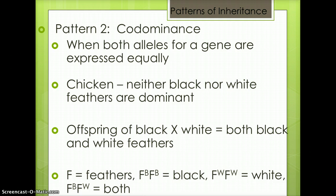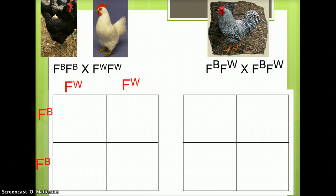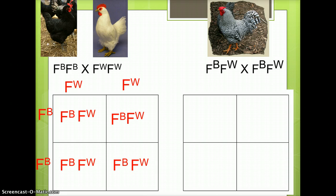When written, feathers is represented with a capital F and the color is represented by a capital letter written to the top right of the letter, as shown here. The Punnett square on the left shows a black chicken crossed with a white chicken. Notice how the alleles are written — a capital letter with a second capital letter on the top right.